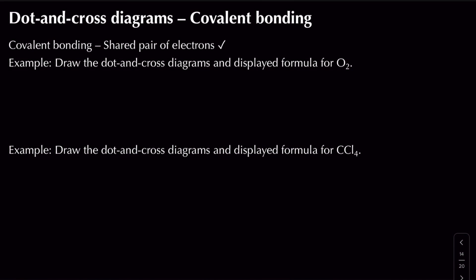If we look at a molecule of XY where both atoms are in group 7, we know that group 7 elements have 7 electrons in the outer shell and we need to get a full octet of 8 electrons. We can achieve this by sharing electrons to form a shared pair. To draw a dot and cross diagram, similar to ionic bonding diagrams, we end up with a Venn diagram shape with a shared pair of electrons in the middle.